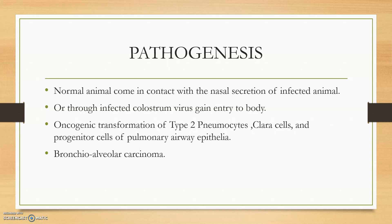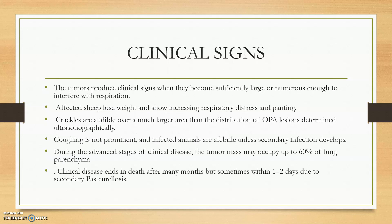The animal will exhibit panting and labored breathing. Clinical signs are mainly due to the adenocarcinoma — the animal will have respiratory distress, panting, and dyspnea. Sometimes a coughing sound can be heard due to the lung infection. Secondary infection also develops in the air passage due to the destruction of the cilia cells, so pasteurellosis must be ruled out in cases of Jaagsiekte.